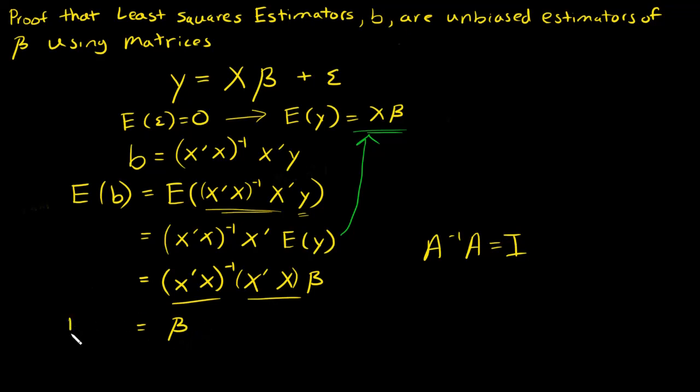We have our result, that the expected value of B equals beta, and that was the proof. Now you're starting to see how matrices made this proof a lot easier than the proof that we did prior without matrices. That's the whole point, that matrices are going to make arriving at our solutions much more efficient than before when we weren't using them.